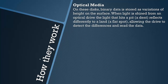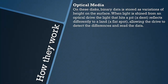Let's have a look at how the different forms work, starting with optical media — probably the easiest of the three. On optical media discs, binary data is stored as variations of height on the surface of the disc. When light is shone from an optical drive, the light that hits a pit — which is a dent — reflects differently to a land, which is just the flat bit. The optical drive detects the difference, and this allows it to read the data.